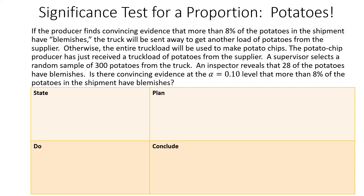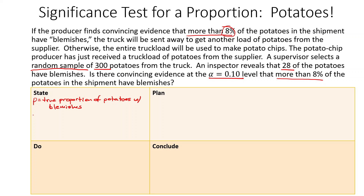Our first example is about potatoes. If the producer finds convincing evidence that more than 8% of the potatoes in the shipment have blemishes, the truck will be sent away. Otherwise the truckload will be used to make potato chips. A supervisor selects a random sample of 300 potatoes; 28 have blemishes. Is there convincing evidence at α = 0.10 that more than 8% have blemishes? So p is the true proportion of potatoes with blemishes.